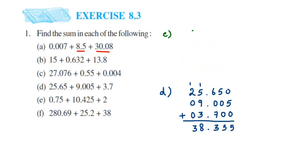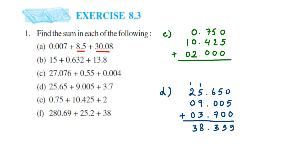Next question: we have 0.75. The next number is 10.425 — line up with the decimal, 10 on the left side, 4, 2, 5 on the right. The next is 2, which is a whole number — it comes on the left side of the decimal point, then put zeros on the right. Now add it up: 5 here; 5 plus 2 is 7; 4 plus 7 is 11, so carry 1; decimal point; 2 plus 1 carry is 3; and 1. So the answer is 13.175.